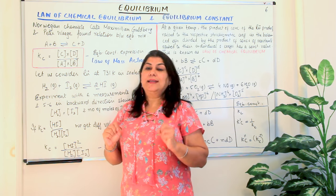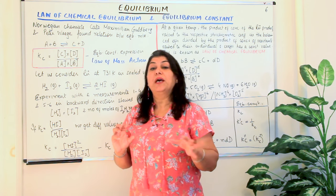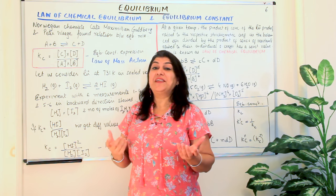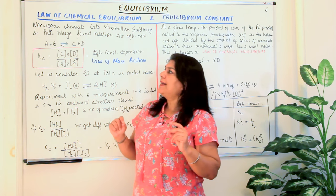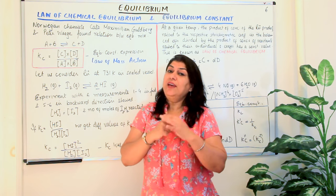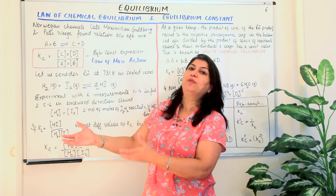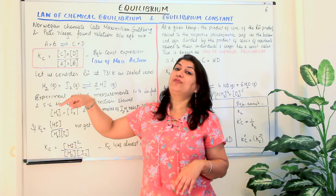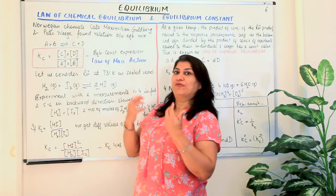Now the next question is: if these concentrations become constant, is there a relationship between the concentrations of the reactants and the products? If there is, what is this relationship? The second question is: if concentrations become constant at equilibrium, is it possible that even before we actually perform the reaction, we know what the concentrations of the reactants and products would be at equilibrium?